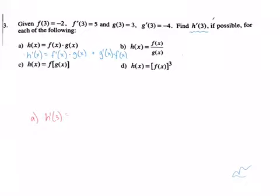So I need to know what f prime of three is, and that is five, times g of three which is three, plus g prime of three negative, multiplied by f of three negative two.